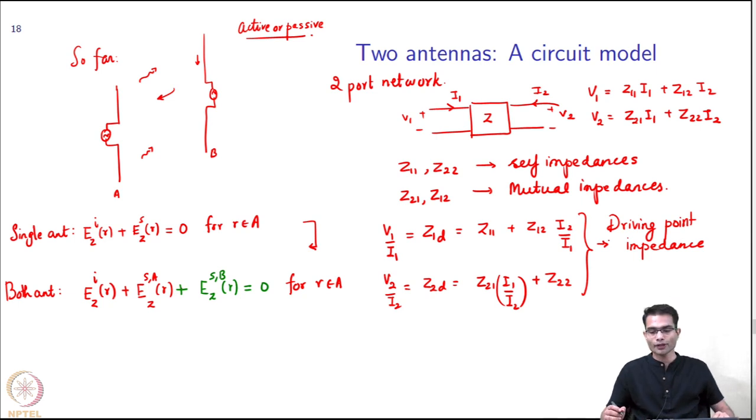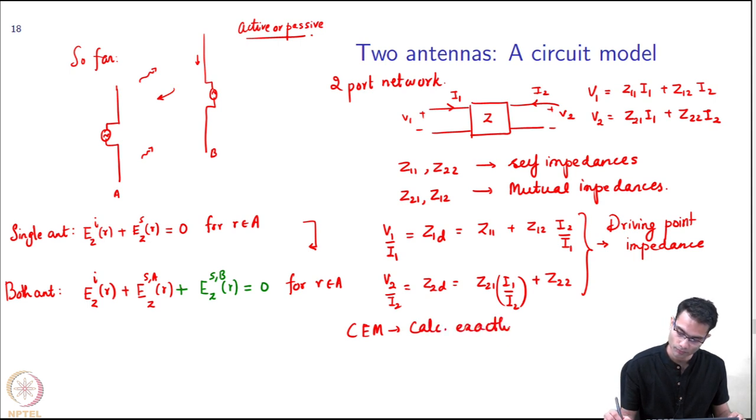You can see that the driving point impedance depends on knowing I_1 and I_2. I need to know what these currents are, only then I can find out what is the matching network to design. Again, how do we calculate this? This was a method which is called the induced EMF method and various other methods. They are used to approximate - if I can get an approximation of the current distribution, then I can calculate this driving point impedance and all of that. That works for very special cases of parallel conductors only Z directed and so on. But if you have some general configuration it is not accurate. CEM again allows us to calculate these exactly.